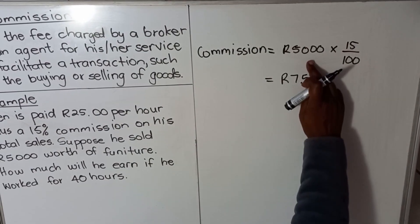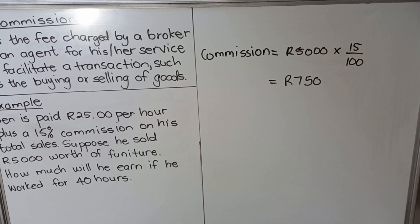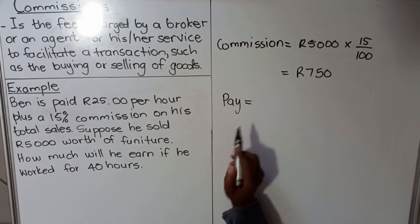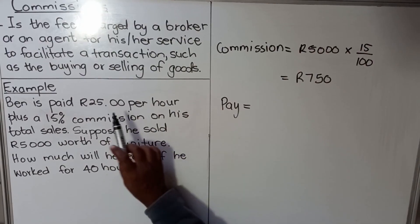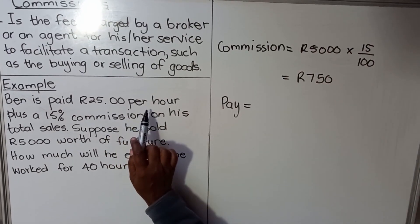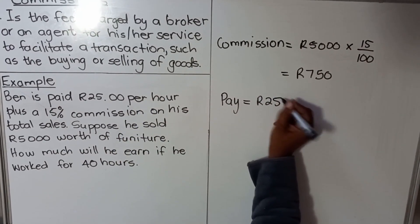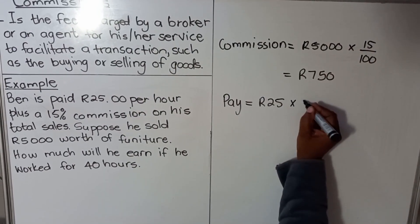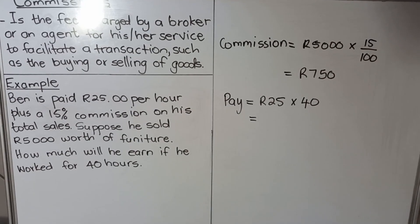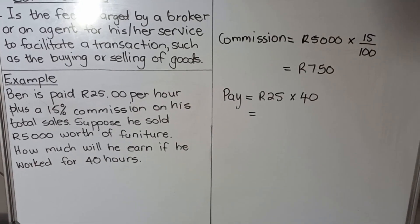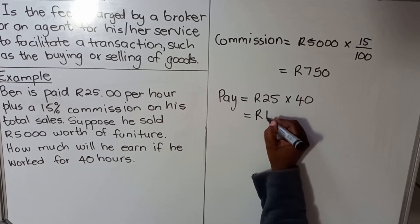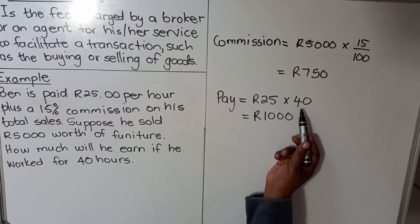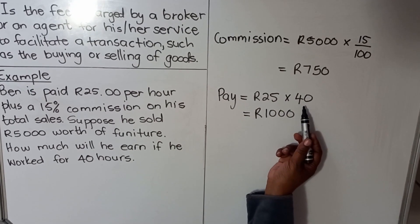The next part is the hours that he worked. He'll be paid 25 francs per hour. He worked for 40 hours, so we multiply 25 francs by 40 hours. That gives us 1,000. He will be paid 1,000 because he's paid 25 francs for every hour and he worked 40 hours.